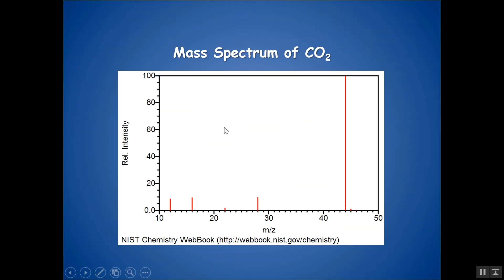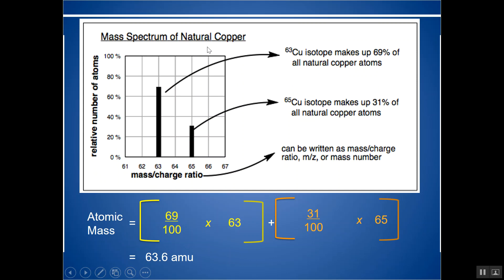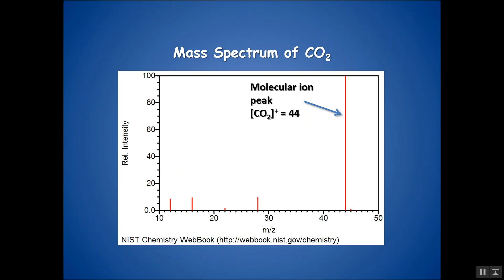Cu is an element that is not found diatomically, not found as molecules. If you pass through something that is a molecule, what's going to happen is you're going to get a peak corresponding to the molecule. Like CO2 has a molar mass of 44, so you'll see a peak at 44. But the ionizer has so much energy that it's actually also going to fragment it into its constituent elements and into even maybe smaller molecules.